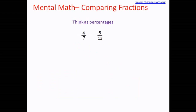But here the numerator is bigger than 3.5, so 4 over 7 is bigger than 50 percent. For the second fraction, 5 over 13, the denominator is 13. Half of 13 is 6.5, so if the numerator were 6.5, the fraction would be exactly 50 percent. But the numerator is smaller than 6.5, meaning this fraction is smaller than 50 percent. So the first is bigger than 50 percent and the second is smaller, which means 4 over 7 is bigger than 5 over 13.